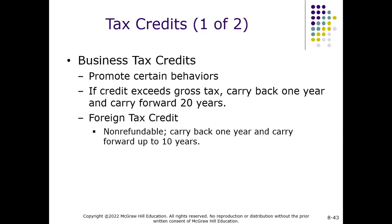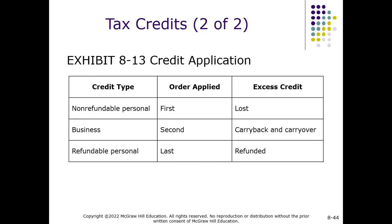The final area of tax credits deals with business tax credits. When determining the order to take credits: first take non-refundable personal credits — if credits exceed tax liability, you lose them. Second, take business credits, because you have the opportunity to carry them back or carry them forward to future tax returns. Take refundable credits last, because they're always refundable no matter what. You want to apply non-refundable credits first.